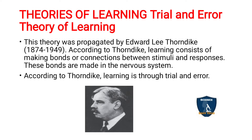Let's look at the first theory — the trial and error theory of learning. This theory was propagated by Edward Lee Thorndike. According to Thorndike, learning takes place by means of making bonds or connections between a stimulus and a response, and these bonds are made in the nervous system.